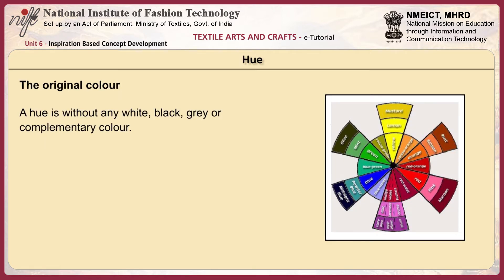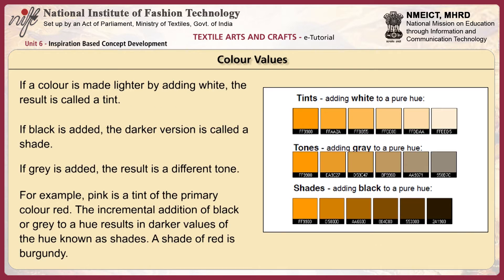The original color, or hue, is without any white, black, grey or complementary color. If a color is made lighter by adding white, the result is called a tint. If black is added, the darker version is called a shade. If grey is added, the result is a different tone. For example, pink is a tint of the primary color red, and the incremental addition of black or grey to a hue results in darker values known as shades — a shade of red is burgundy.